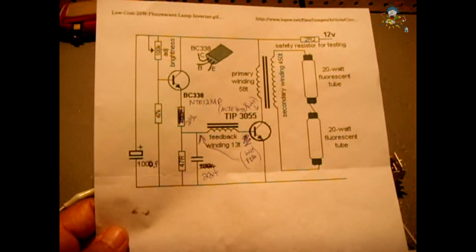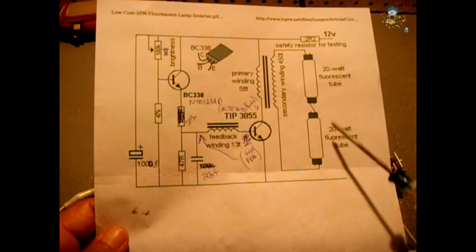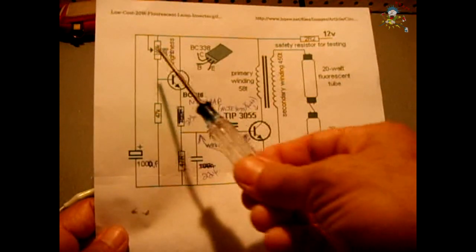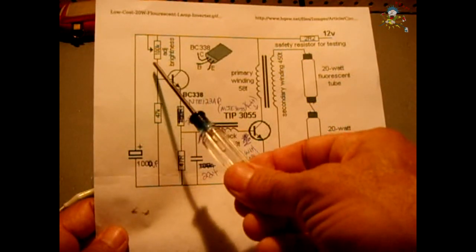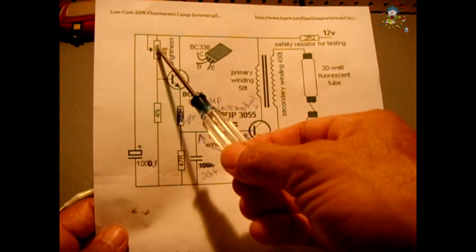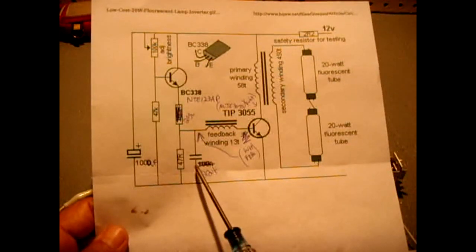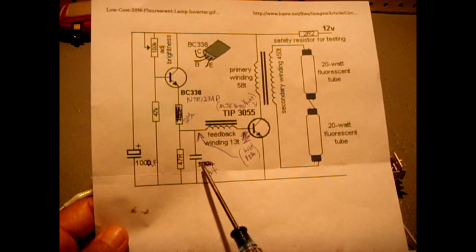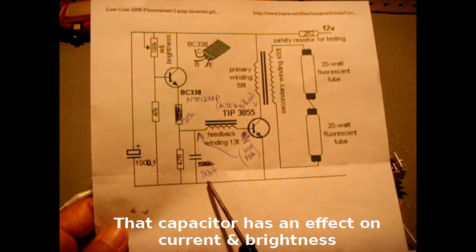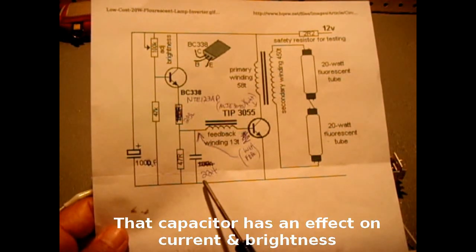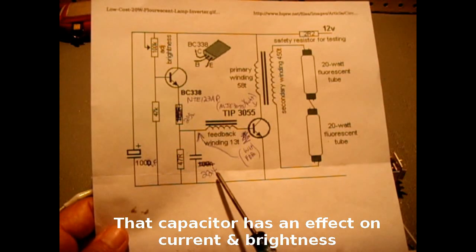Now the circuit does have a brightness adjustment for the fluorescent tube or tubes, and that uses a 100k potentiometer. That adjusts how much current flows into the base of this transistor. I changed the 100N or the 0.1 microfarad capacitor to a 224 capacitor or a 0.22 microfarad.